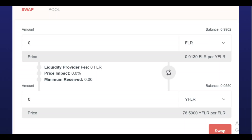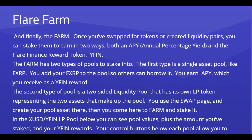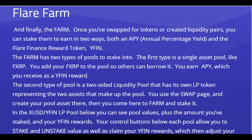If Spark's price decreases while you're providing liquidity, you'll pull out with more Spark. By providing liquidity to these pools, you receive an LP token which you then bring into Flare Farm. Once you've swapped for tokens or created liquidity pairs, you can stake them to earn in two ways: an APY annual percentage yield and the Flare Finance reward token YFIN. YFIN is the treasure on Flare Finance — only 11,000 supply, potentially worth hundreds of thousands of dollars, and can only be obtained by Flare Farm. The farm has two types of pools: a single asset pool like FXRP, and a two-sided liquidity pool.